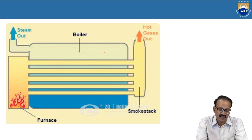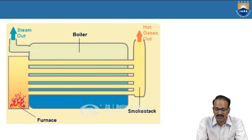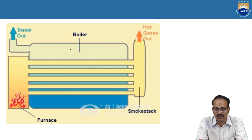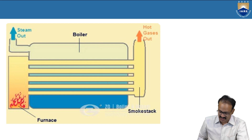This is the furnace. You can observe the steam. At the first stage, water is slowly getting heated — one tube above the other. As you go higher, there is more heat, more steam: some amount of steam, then 50% steam, then almost fully steam. Here the steam goes out and hot gases go out. This is one example of a horizontal boiler.